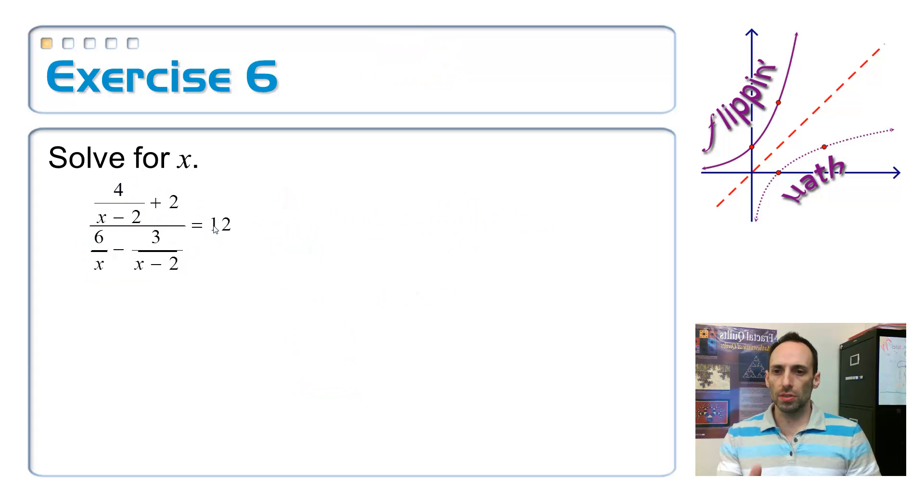So, look at this marvelous example. This one is for you to try. Just a little tip before you start. This 12, make it 12 over 1, and then you can cross-multiply. All right, go ahead and pause that and give it a try yourself.